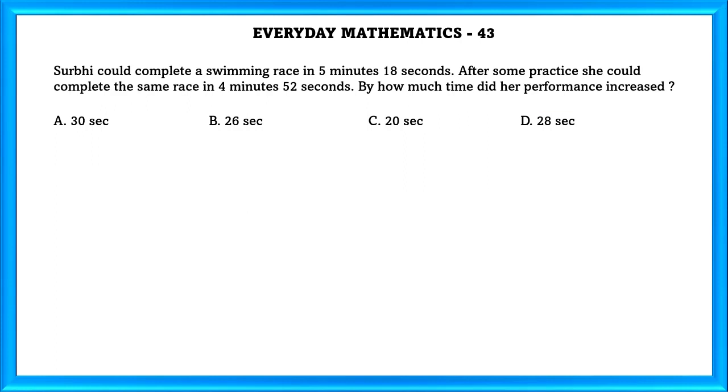Question Number 43: Surabhi could complete a swimming race in 5 minutes 18 seconds. After some practice, she could complete the same race in 4 minutes 52 seconds. By how much time did her performance increase? Her performance increased by 26 seconds, that is 5 minutes 18 seconds minus 4 minutes 52 seconds.